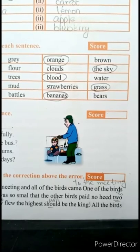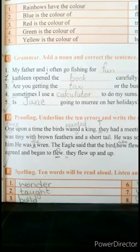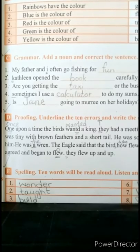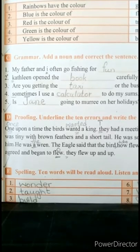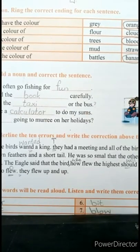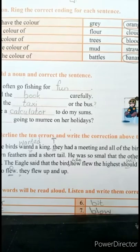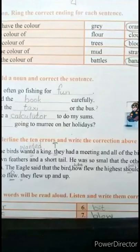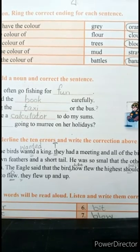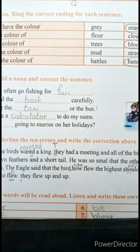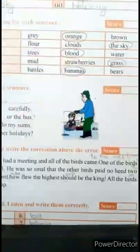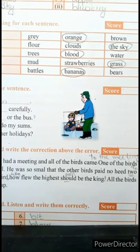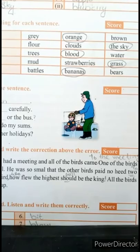He was a wren — wren ایک چھوٹے پرندے کا نام ہے، اردو میں اسکو پِت پِتی کہتے ہیں. The eagle said that the bird who flew the highest should be the king. یہاں پر 'who' آئے گا — H-O — اور bird کے بعد comma. 'Should' کی جگہ 'will' آئے گا، اور king کے بعد exclamation mark.